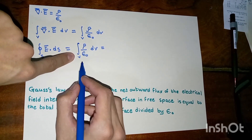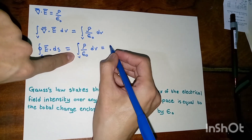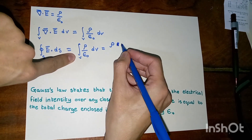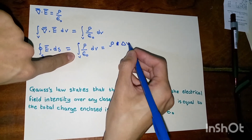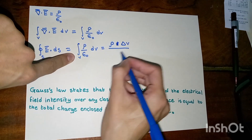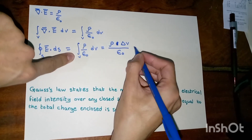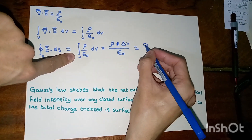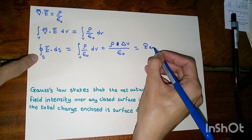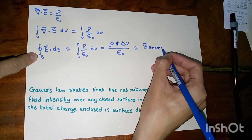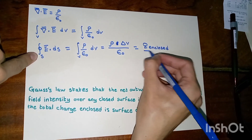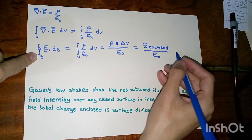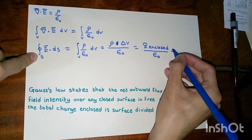When we evaluate this integral, we end up with rho times delta V over epsilon. Since rho, the charge density, times the volume equals the total charge enclosed in the surface, the result is the enclosed charge divided by epsilon, the permittivity of free space. And this is Gauss's law.